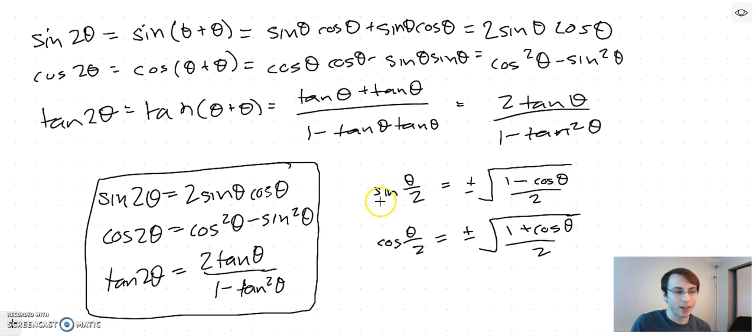Maybe think about plugging in 0 for θ. Sine of 0, that should come out to 0. So this has to be a minus for 1 minus cos 0 to come out to 0. Cos 0 is 1, so that way 1 plus cos 0 comes out to 2, and then that makes this thing 1, which matches up with cos θ/2, which goes to 1.